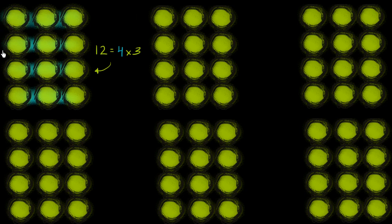If I have 1, 2, 3, 4 groups, and in each of those groups I have 1, 2, 3 objects, I'm going to have a total of 12 objects.